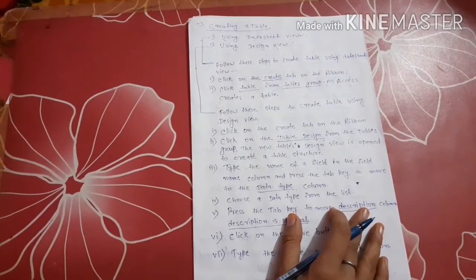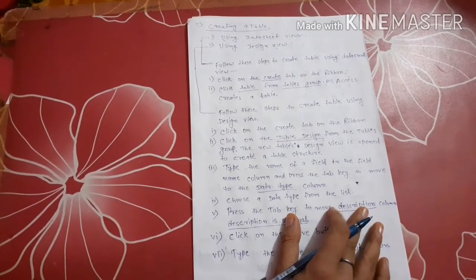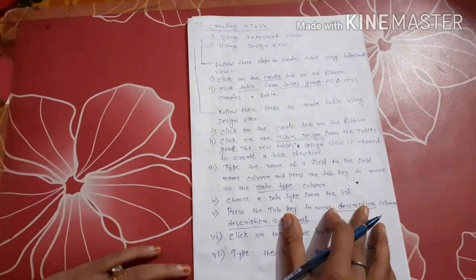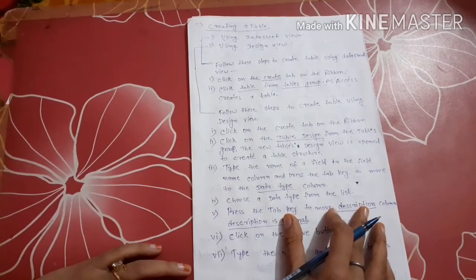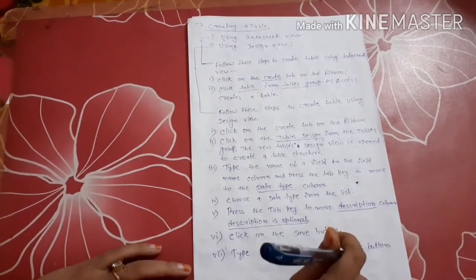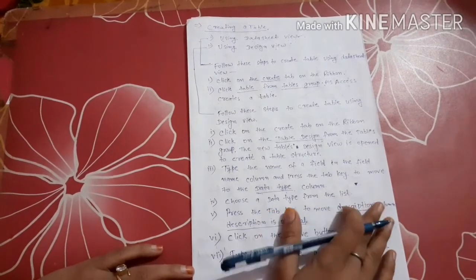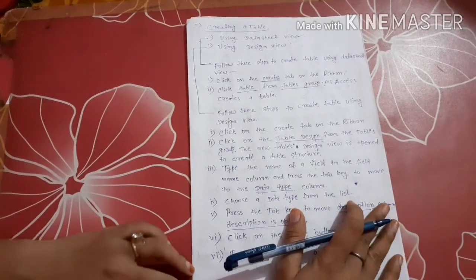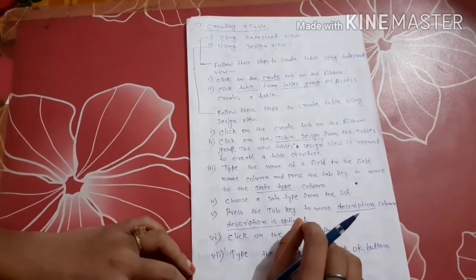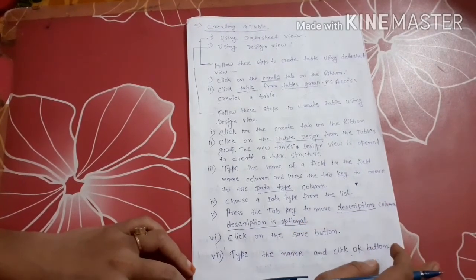So students, in this video you have learned how to create a database, how to create a database using a blank template, and how to create tables. In the next video we will cover the other topics: primary key, switching views, relationships, and how to open a pre-existing database in MS Access. Thank you.